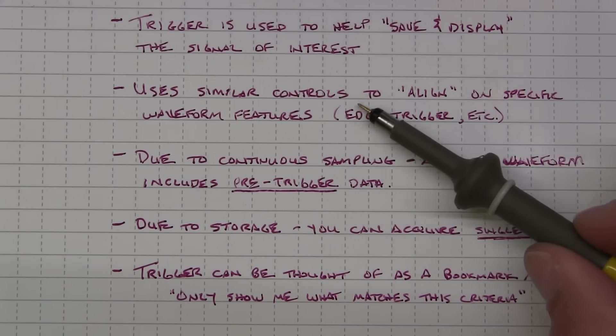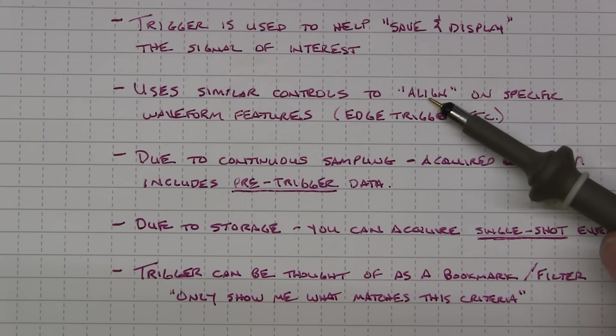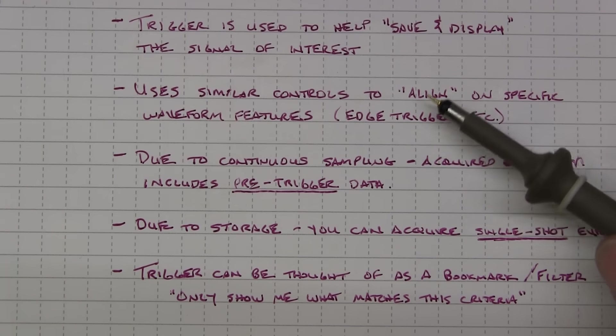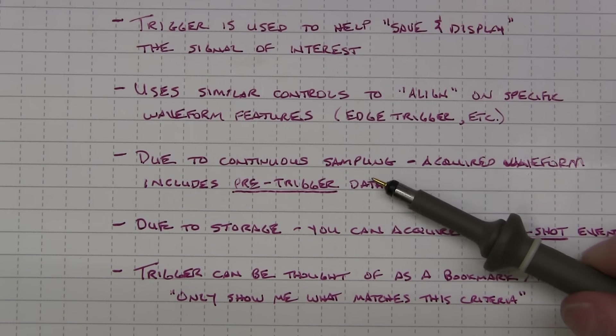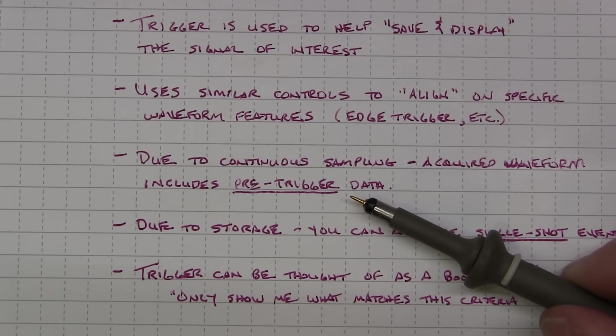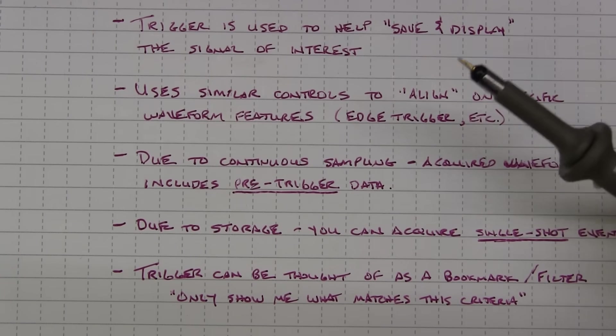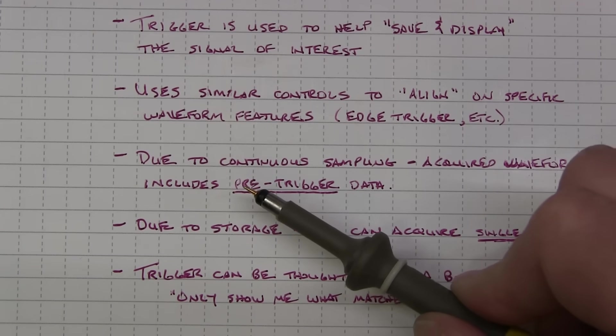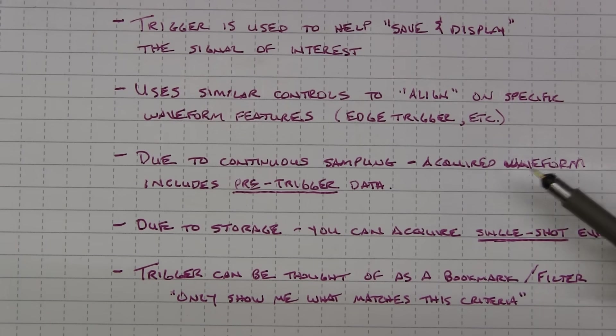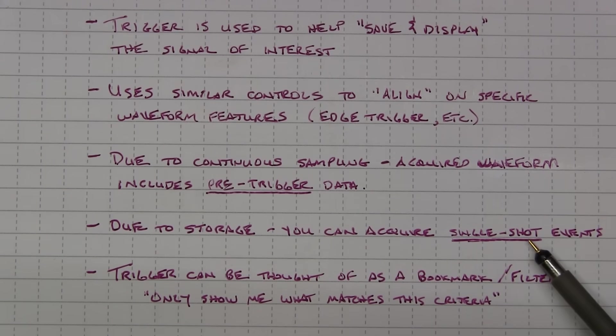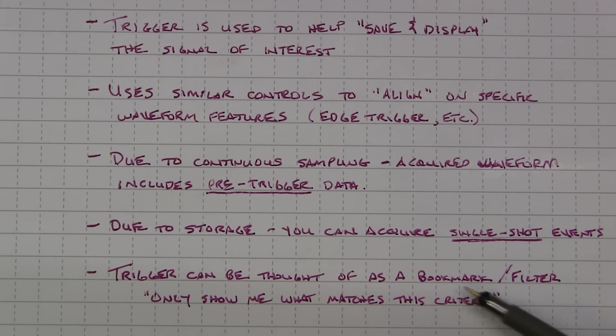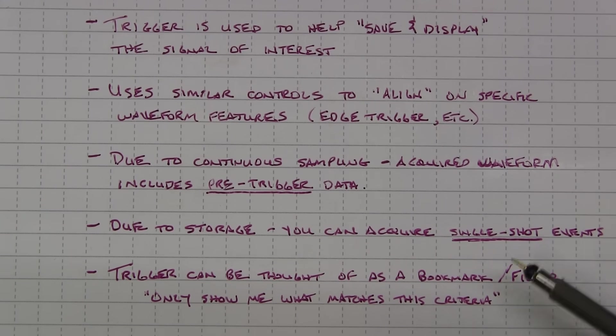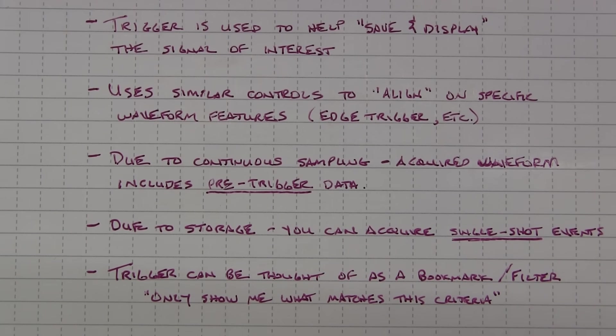The setup and controls are actually fairly similar to the analog scopes and you're really using them to effectively align on a specific waveform feature like a rising edge, a falling edge or something like that. And due to the continuous sampling, the acquired waveform can include pre-trigger data because the trigger system's looking at this continuous sampling of the waveform saying okay here's your edge, instead of putting that at the very beginning of the display I'm going to stick it in the middle. So I can see everything to the left of that is pre-trigger information, everything to the right of it is post-trigger. So now I can naturally see what led up to the trigger event and what happened after it. And because we've got this waveform storage we can actually acquire single shot events. Trigger once, capture the waveform and then go analyze it as much as you want. So a trigger on a digital scope can be thought of as a bookmark or a filter in a sense, to only show you what matches that particular trigger criteria.